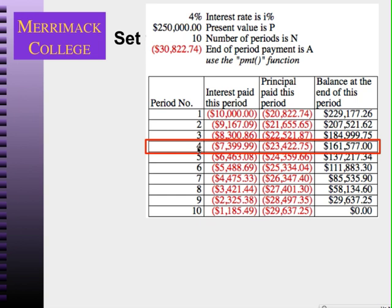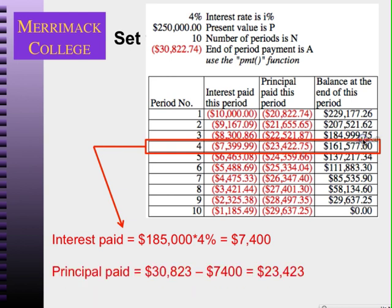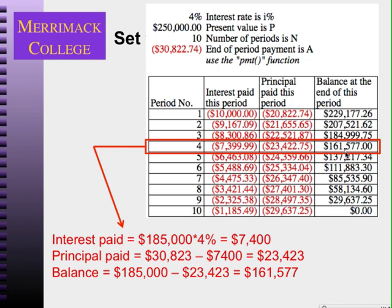Looking at year four: the balance at the end of year three is $185,000, so I pay four percent of that — $7,400 in interest — and the remainder of my $30,823 payment reduces the principal. That leaves a balance at the end of year four of $161,577. This can also be done on a monthly basis if the period is in months, and it's a great way to figure out how much you owe on your car or your house.